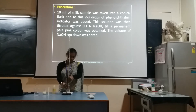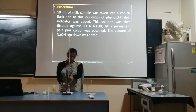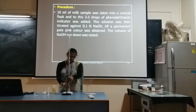Continue titrating until you get the permanent pale pink colour. Once you get the permanent pale pink colour, stop the titration and record the reading. Write that reading in the tabular column. While performing this experiment, continuously stir the conical flask for proper mixing of the NaOH with the milk.